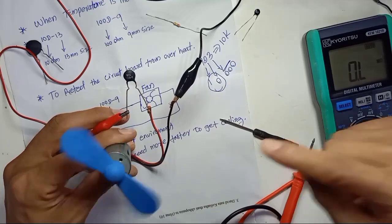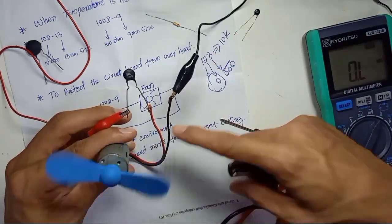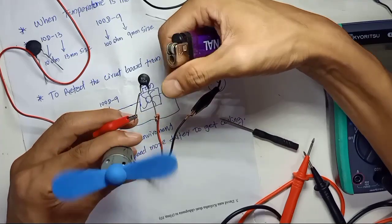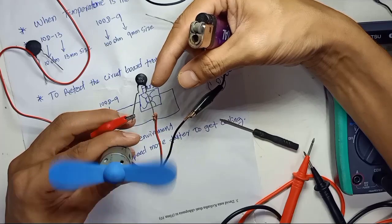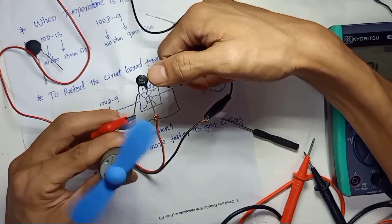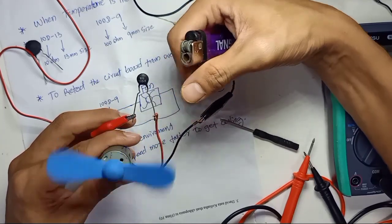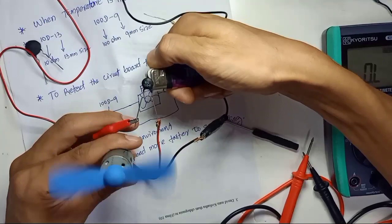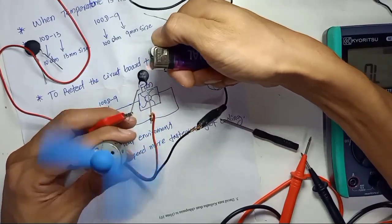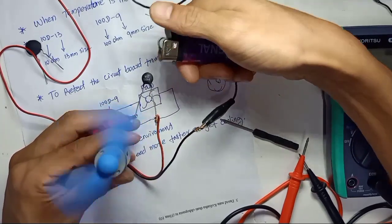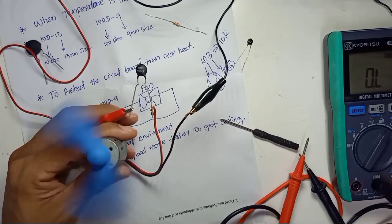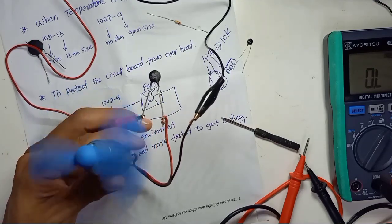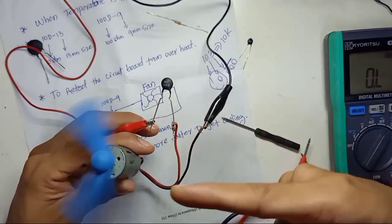I don't have a fan so I'm using a DC motor. The 100D-9 thermistor is 100 ohms resistance. If I apply heat to the thermistor, the ohm will decrease and the motor — acting as the fan — will spin faster. Observe: the motor is now much faster because the ohm has already decreased. When the thermistor cools down, the fan will slow down.